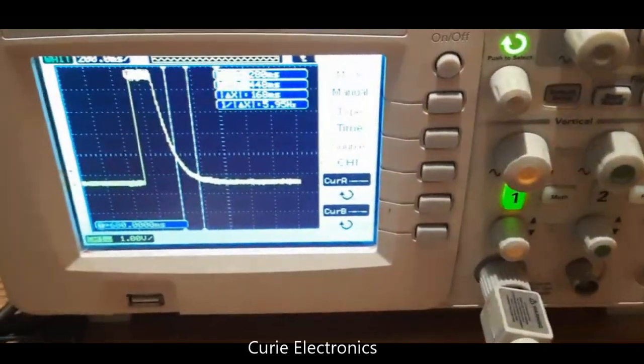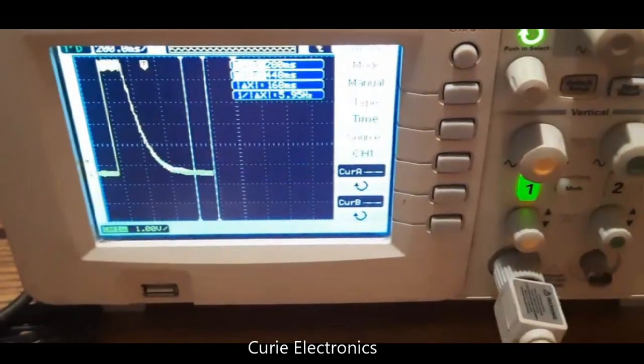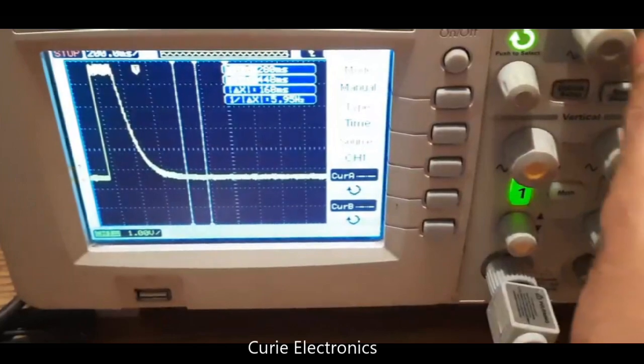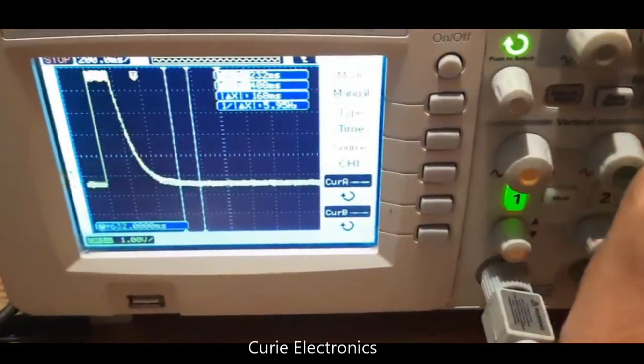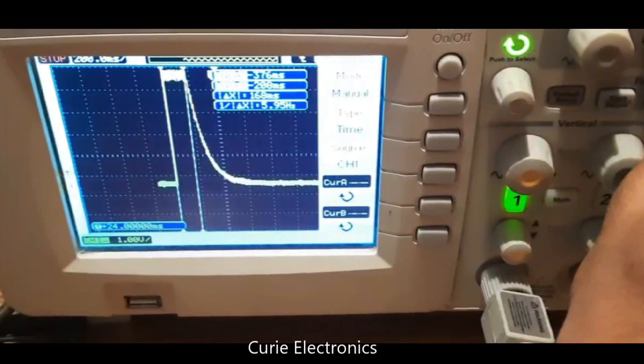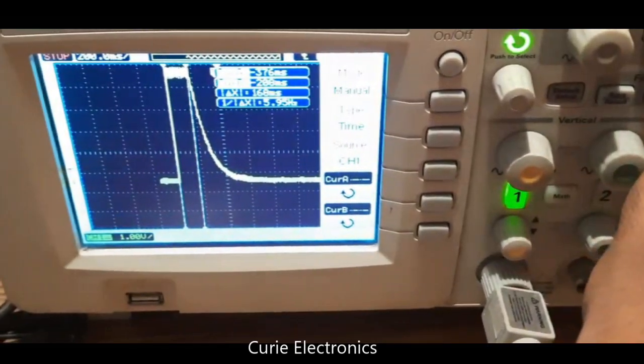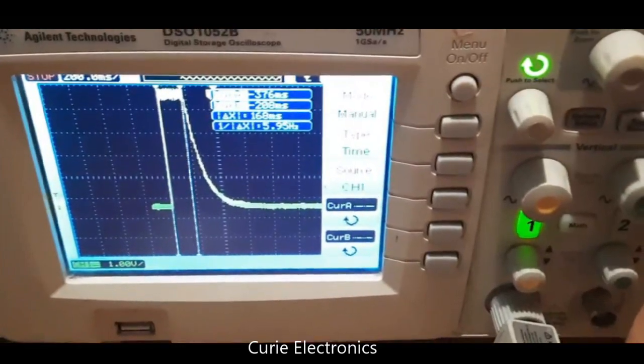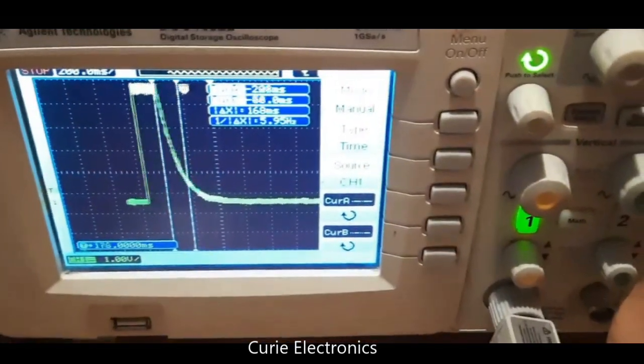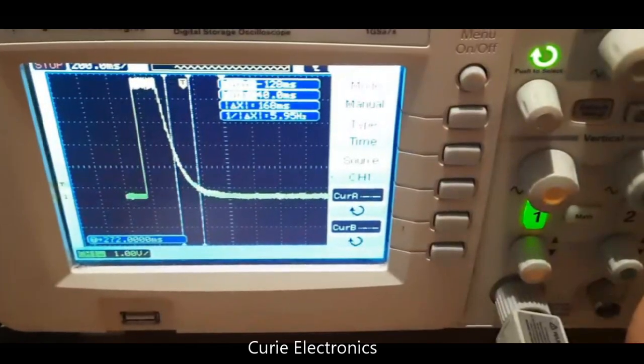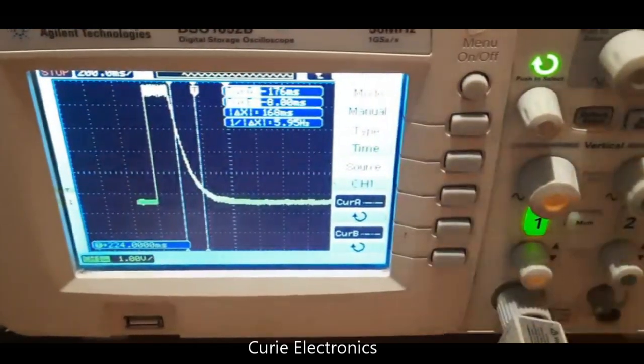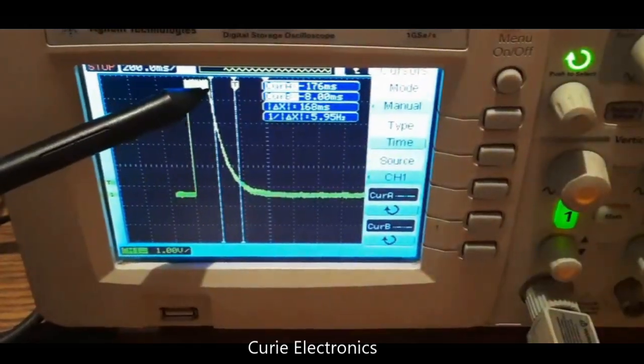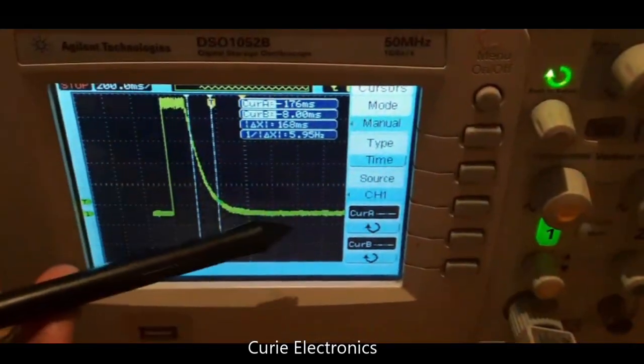See, we are getting a waveform like this. We got our waveform. This time period also, if we measure, we are getting nearly 150 milliseconds, 168, okay. Not exact measurement, just to give you the idea. This is what is happening. Initially the waveform is high; when you manual reset, it goes to high then it goes to low. That means the reset is occurring from this high state.